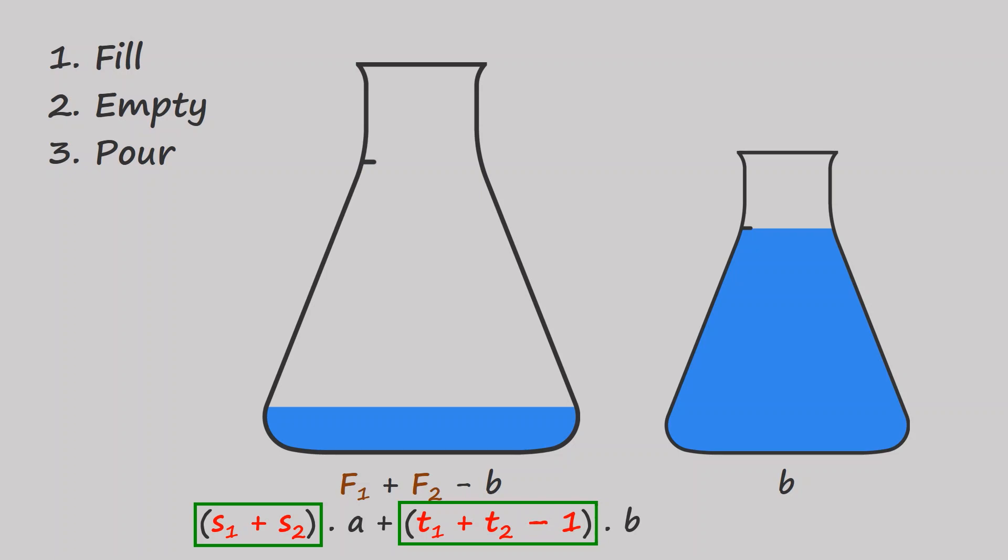We now know that any action we take on a state with integer linear combinations will give us another state with integer linear combinations. But how do we finish the proof? Well, we know that we always start with empty flasks, and that zero is an integer linear combination.